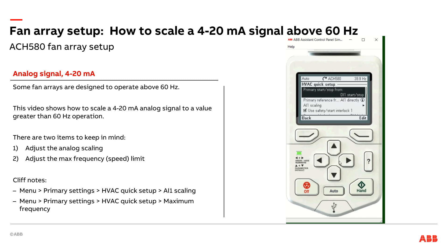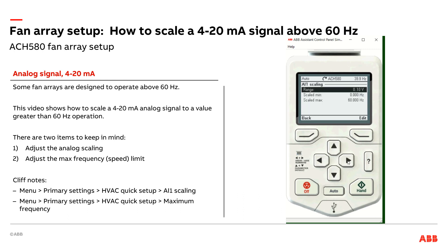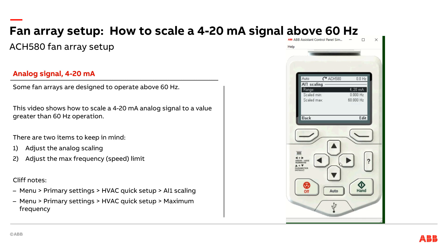You're going to see the third item down here is my analog input scaling. I've got my 4 to 20 milliamp on analog input 1. So let's do that scaling now. Hit the right arrow, or I could hit select in the top right corner. My range factor default is 0 to 10 — no good, I want 4 to 20. So let's go ahead and edit that. Come down to here, 4 to 20. There we go. Now I've got my scaling.